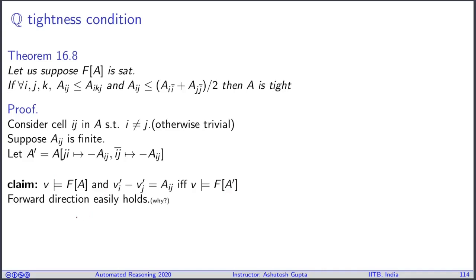First we prove the forward direction, which easily holds because since v satisfies A and the difference is aij, you can easily check that every other constraint will be satisfied and the updated one will also be satisfied because of the construction.